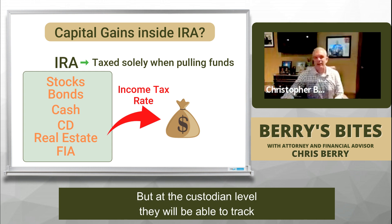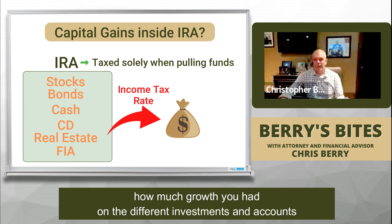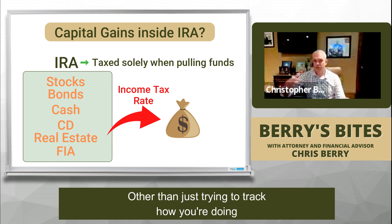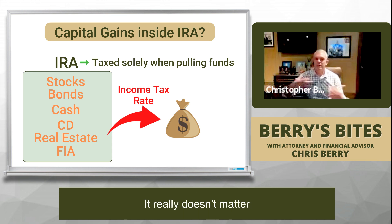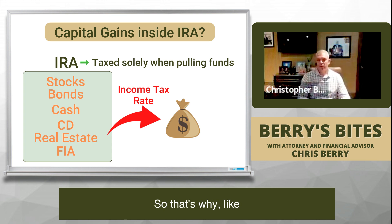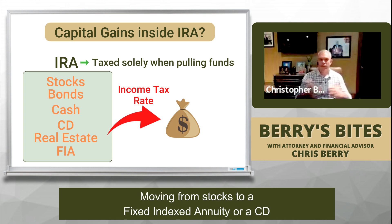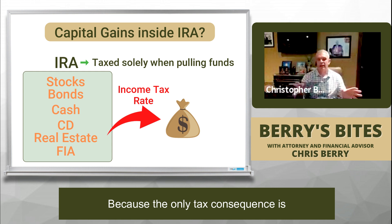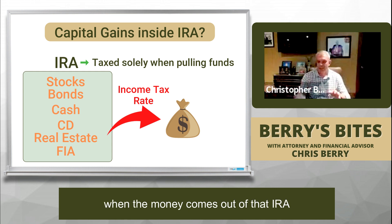At the custodian level, they'll be able to track how much growth you've had on the different investments and accounts. But from a tax perspective, other than just trying to track how you're doing, it really doesn't matter — you don't need to track capital gains. So moving from stocks to a fixed index annuity or a CD, you can do that all within an IRA and there's no tax consequences, because the only tax consequence is when the money comes out of that IRA.